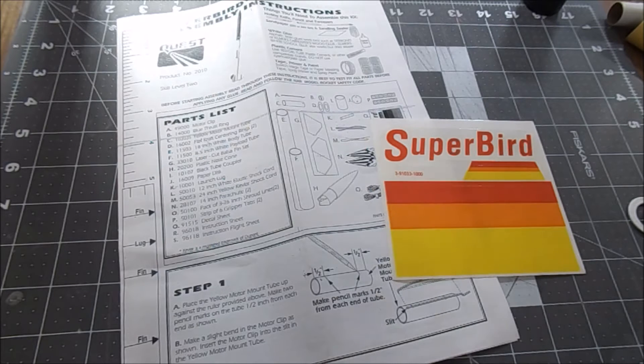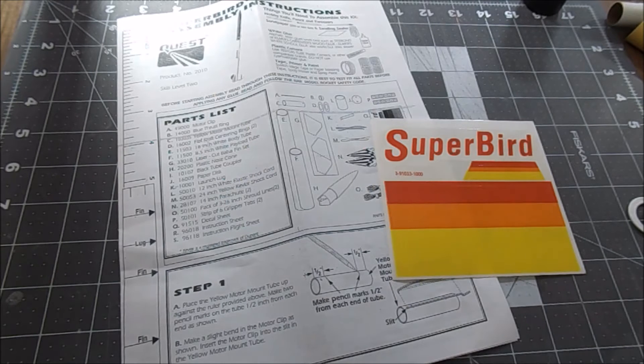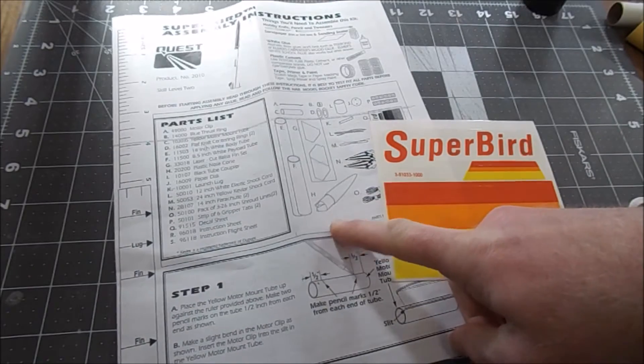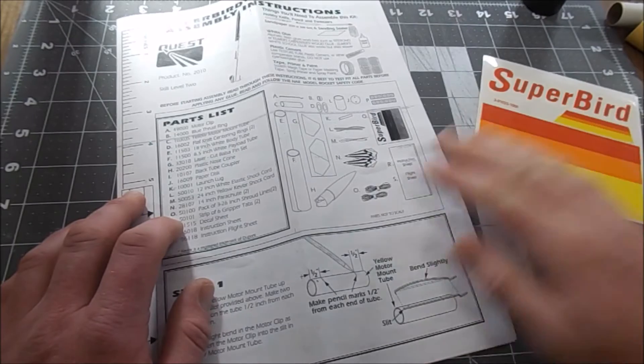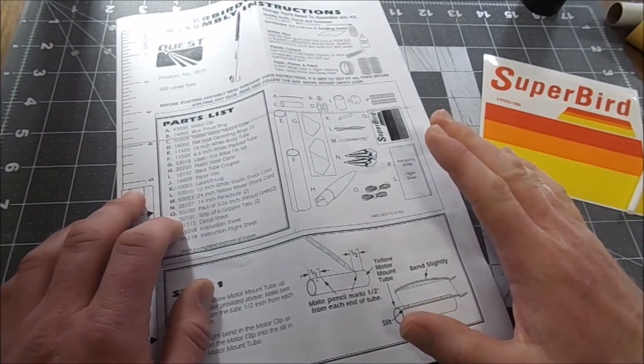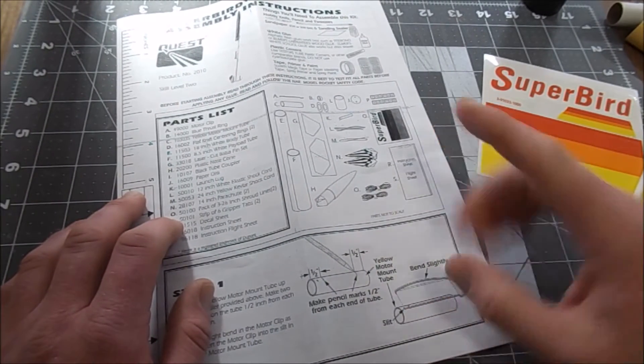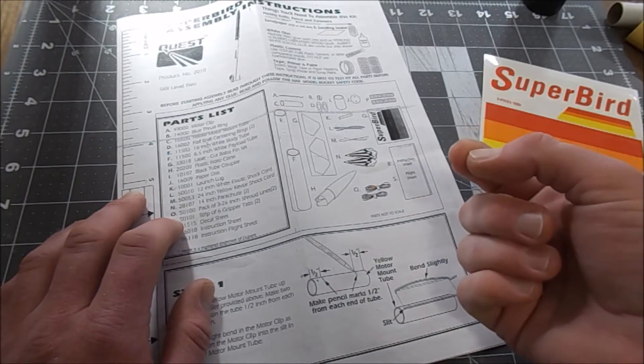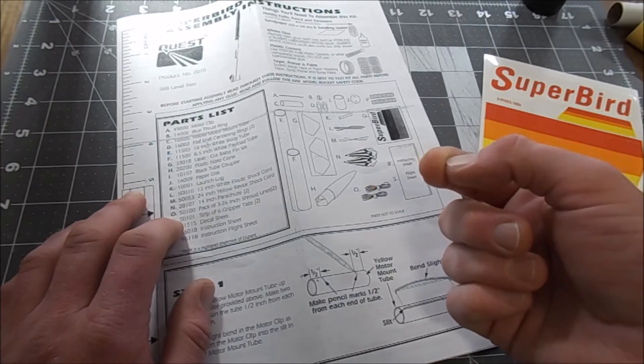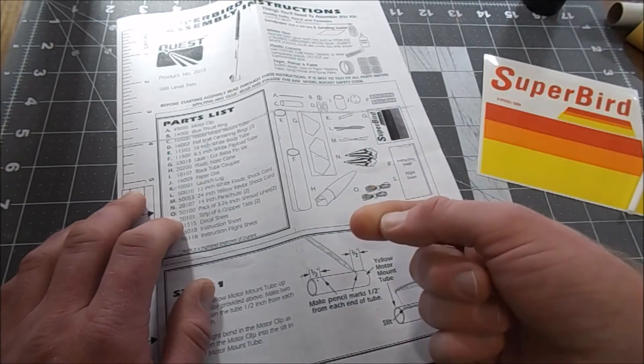Hello YouTube, it's Daniel the Rocket Noob again and we're back with the Superbird by Quest Aerospace. I've just been reading the instructions and found some very interesting things I wanted to share with you. It's important to always read the instructions before you start building a rocket, especially if you're new and have never built one before. You might find some steps that you'll need to consider before you get to them, and you might find some inconsistencies.